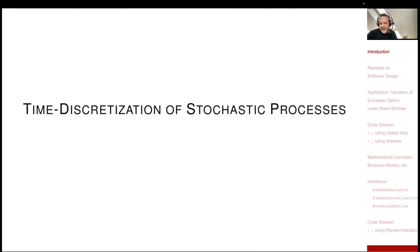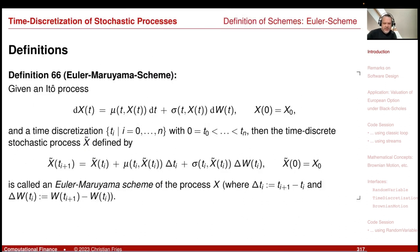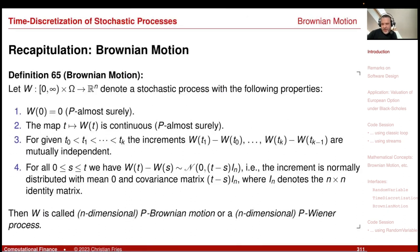For our model, I need a sequence of normally distributed random numbers. I need the technique of generating random numbers of other distributions — specifically the inversion of the distribution function. In the next session, I will also discuss the time discretization of stochastic processes and create an implementation of our Euler scheme. For today, I just need the Brownian increment for a single step.